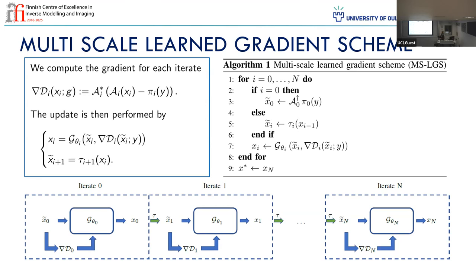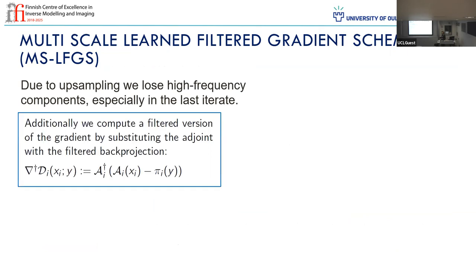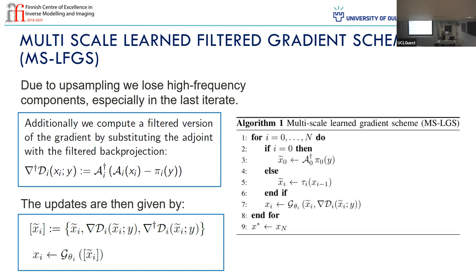Unfortunately, we noticed that this works quite nicely, but we lose some of the high-frequency components due to the upsampling, which in terms of quantitative results was not desired. So on top of computing the gradient of the back projection, we also compute what we call the filter gradient — we use the filter back projection to retain some of the high-frequency components in the gradient information. Instead of the adjoint, we use the filter back projection, and we use another family of networks for the updates: we have the current iterate, the gradient of the data fidelity, plus the filter gradient which has more high-frequency information.